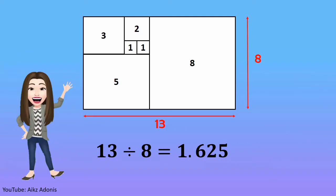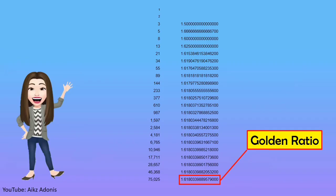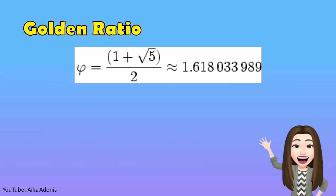Going back to the rectangle, what if we were going to divide the two dimensions — 8 and 13 in this case? Notice that it's just like dividing two consecutive Fibonacci numbers, right? Doing this with all possible pairs of Fibonacci numbers will give us the golden ratio. The golden ratio is approximately equal to 1.618,